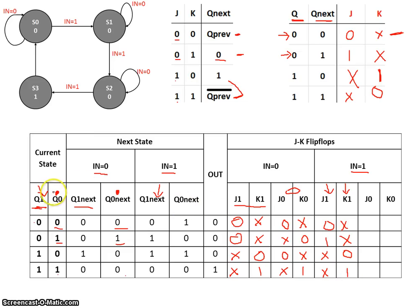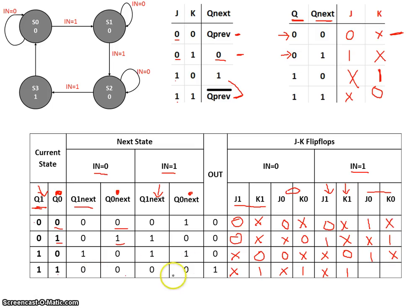Now looking at Q0 and Q0-next under input equals 1, filling out J0 and K0: going from 0 to 1 gives J0=1, K0=x; going from 1 to 0 gives J0=x, K0=1; going from 0 to 1 again gives J0=1, K0=x; and going from 1 to 0 gives J0=x, K0=1.